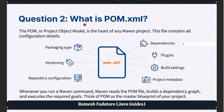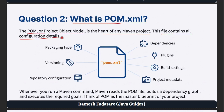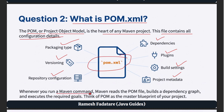Question 2: What is pom.xml? The POM, or Project Object Model, is the heart of any Maven project. This file contains all configuration details — it includes dependencies, plugins, build settings, project metadata, repository configuration, versioning, packaging type, and more. Whenever you run a Maven command, Maven reads the POM file, builds a dependency graph, and executes the required goals. Think of POM as the master blueprint of your project.